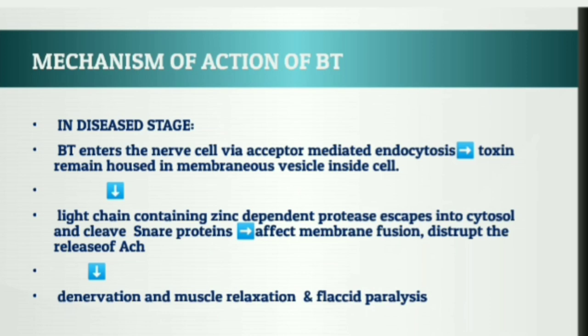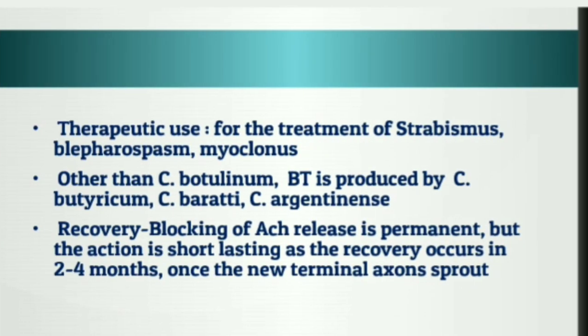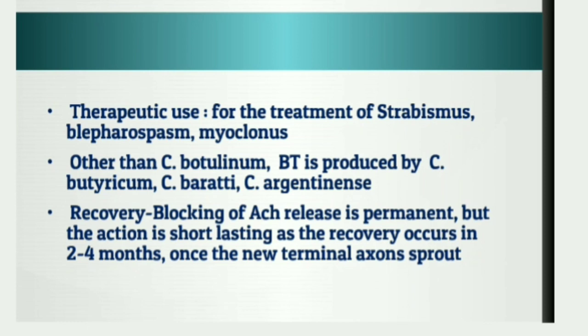Since this toxin causes flaccid paralysis, it can be used for the treatment of spasmodic conditions such as strabismus, blepharospasm, and myoclonus. Strabismus is a disorder where the eyes do not look in exactly the same direction at the same time, due to nerve injury or dysfunction of eye-controlling muscles. Blepharospasm means uncontrolled squeezing or twitching of the eyelid. Myoclonus means sudden involuntary muscle jerks, shakes, or spasms.